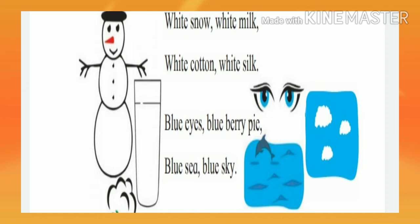And white silk — silk is a type of fabric. Cotton is also a fabric. Silk is white. So we have: white snow, white milk, white cotton, white silk.